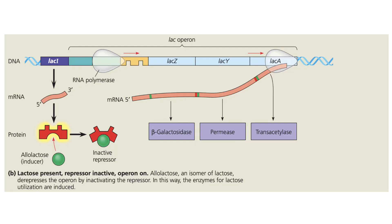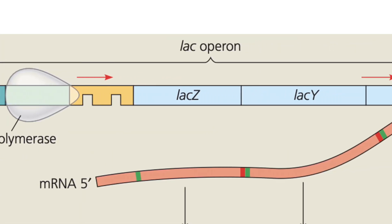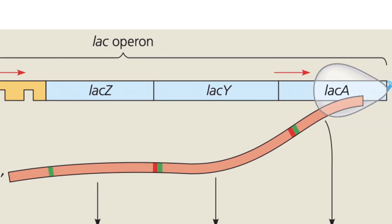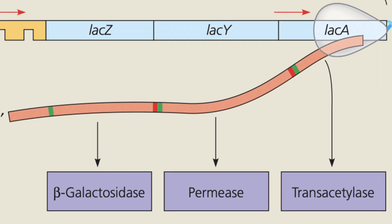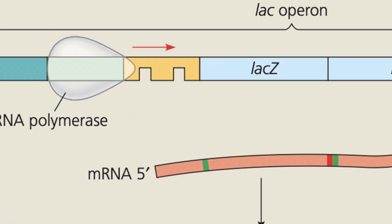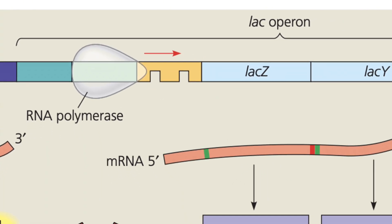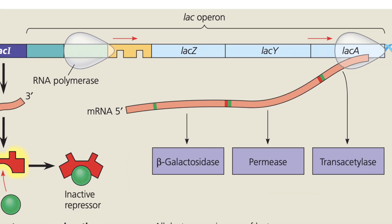The lac operon consists of a single promoter upstream of three structural genes: lac Z, lac Y, and lac A. These genes make proteins involved in lactose transport, modification, and digestion — with lac Z encoding lactase, the enzyme that catalyzes lactose's hydrolysis into glucose and galactose. What makes operons special is the operator region that sits between the promoter and the structural genes. This operator acts as a switch to either allow transcription when lactose is abundant or block the cluster from being transcribed in the absence of lactose.